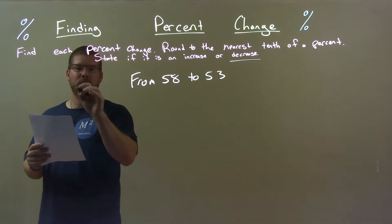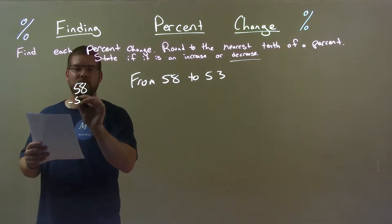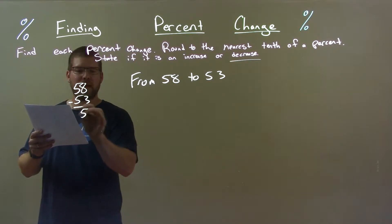Now we find a difference between these two numbers: 58 minus 53 comes out to be good old 5.